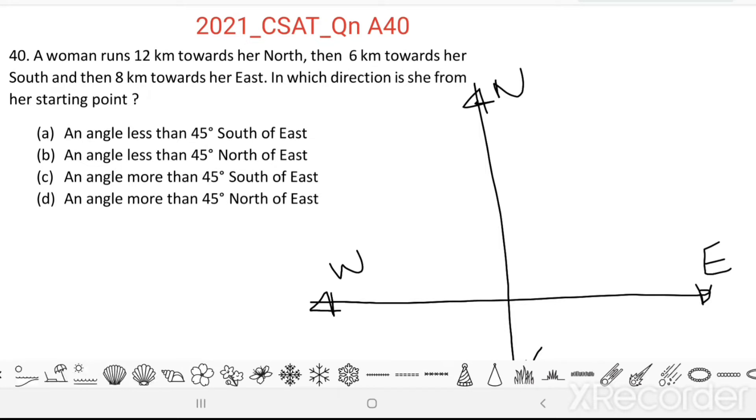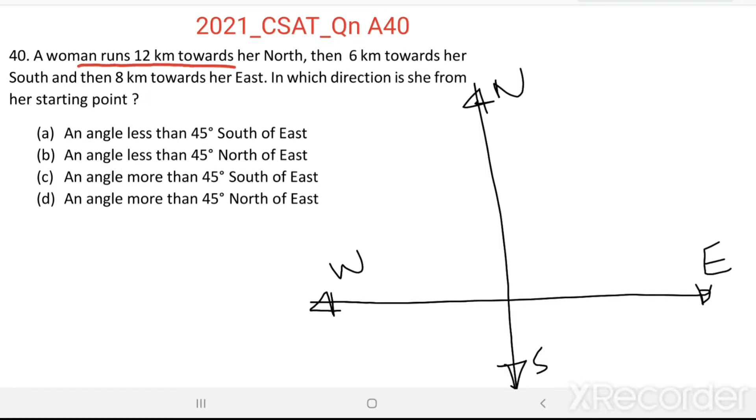Then here, a woman runs 12 km towards her north. Suppose she is starting from the point O, then 12 km towards her north, then she reached a point P.